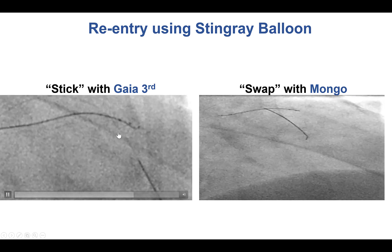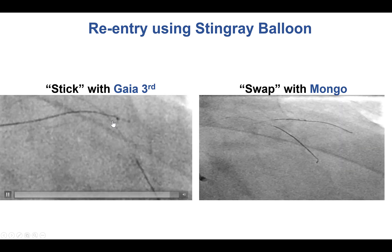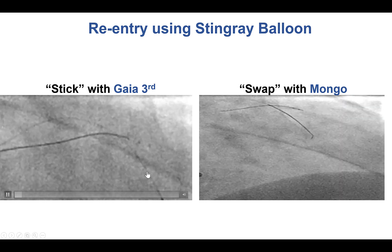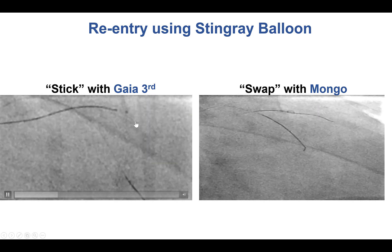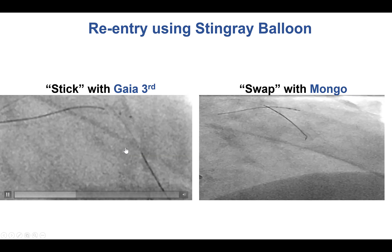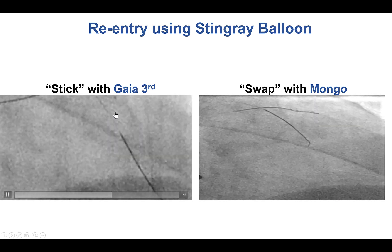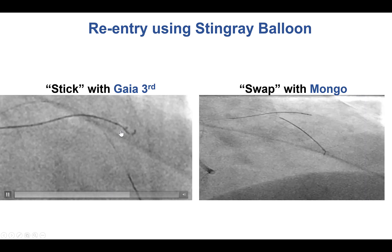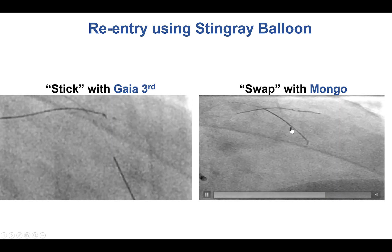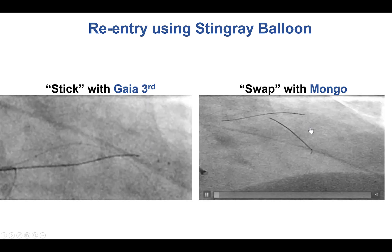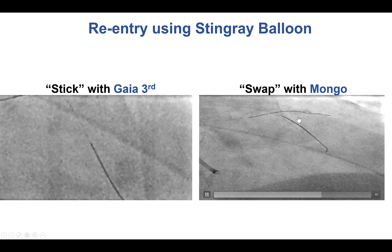Therefore, re-entry was essentially blind. We performed the so-called double-blind stick and swap, sticking from both sides. The exit port proximal to the proximal marker was used, but we also advanced a Gaia third wire into the exit port between the two markers — sticking both inferiorly between the two markers and superiorly via the exit port proximal to the proximal marker. We then used a polymer-jacketed Mongo guide wire, which exits from the proximal exit port and seemed to advance smoothly along the course of the vessel.